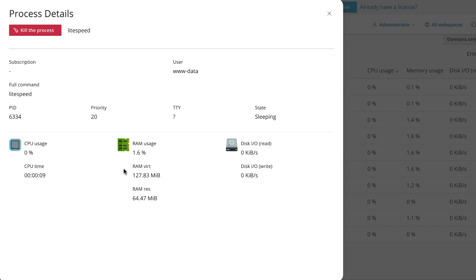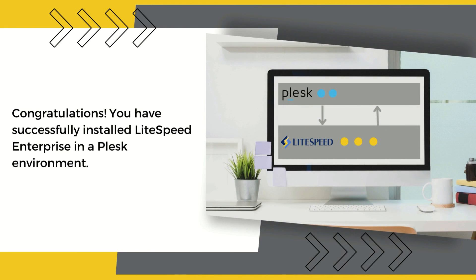At this point, LiteSpeed is installed and running alongside Apache on a port offset. Take this opportunity to test your configuration, install the LiteSpeed plugin if you haven't already, and use it to configure caching across your server. When everything is configured to your liking, you can use the plugin to switch to LiteSpeed web server full time. Congratulations, you've successfully installed LiteSpeed Enterprise in a Plesk environment. If you face any issues, please see the links in the description for troubleshooting, or open a support ticket from your client area. Thank you for liking, sharing, and subscribing — see you soon.